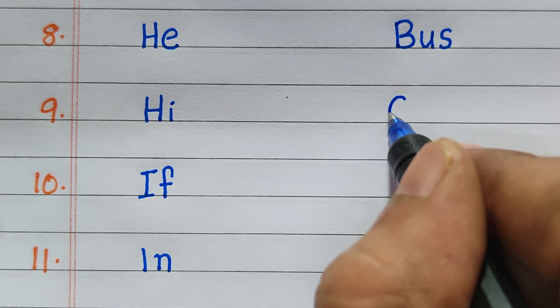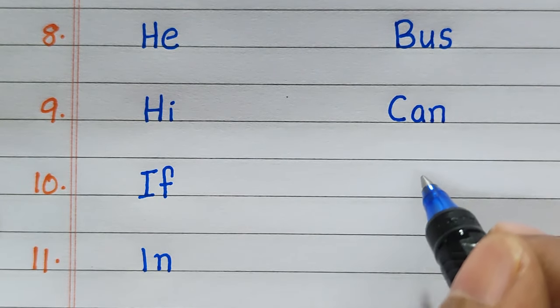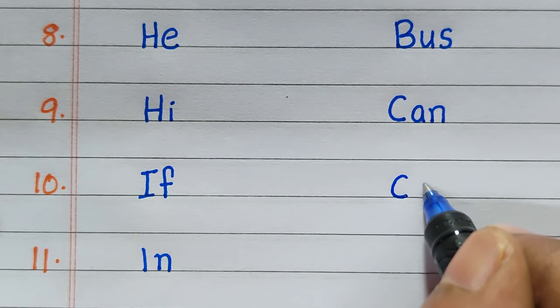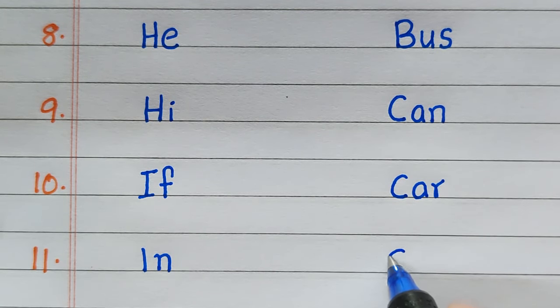Ninth three-letter word is can. Tenth it is car. Eleventh, cow.